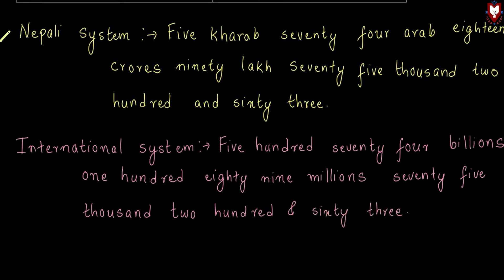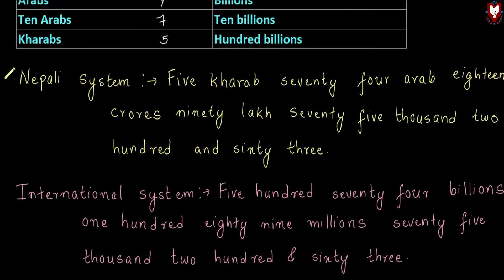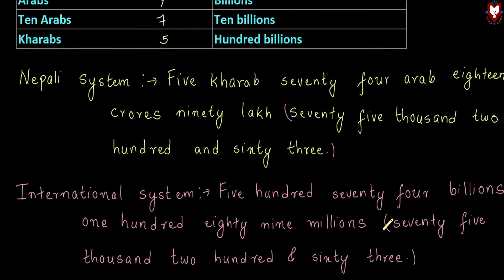So this is how we compare the Nepali system and international system — this is the word form. We have 2 systems that are different. In the Nepali system we have 5,74,18,90,75,263. In the international system we have 574 billions, 189 millions, 75,263. In both systems, the last part 75,263 is the common part.